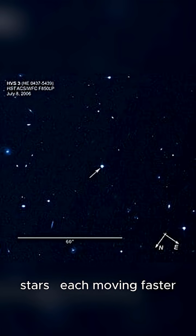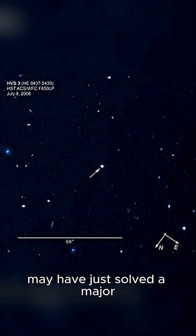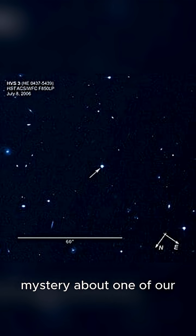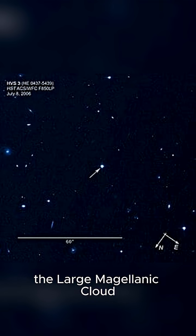Three runaway stars, each moving faster than a thousand kilometers per second, may have just solved a major mystery about one of our closest galactic neighbors, the Large Magellanic Cloud.